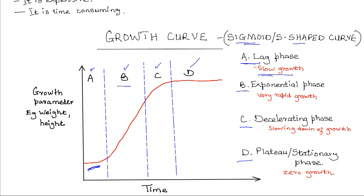The exponential phase is characterized by very rapid growth. This is due to a number of reasons: there is a large number of dividing cells; the cells have adjusted to the environment; nutrients and other factors such as oxygen are at optimum levels; so the cells are dividing and growing at a very fast rate. Additionally, the rate of cell increase due to division is greater than the rate of cell death.